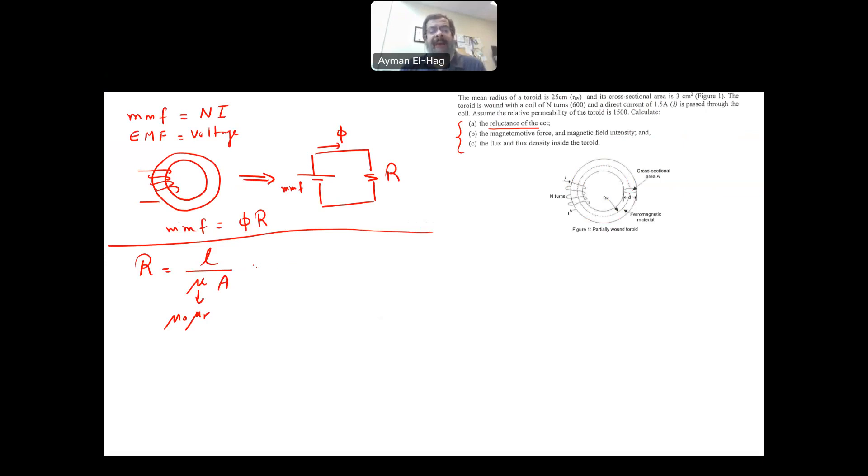Now, we have everything. And we are given the radius. So this is a circle. So this would be 2 pi times r average divided by mu zero is a constant 4 pi times 10 to minus 7 times the mu R, which is 1500, times A is the cross sectional area, which is basically 3 centimeters squared.